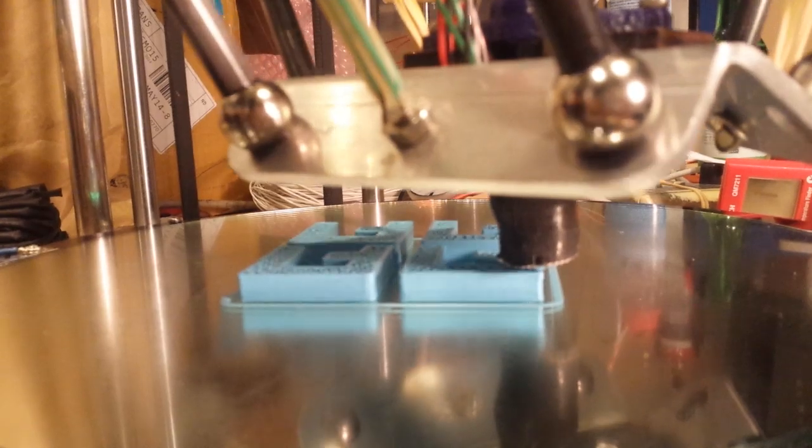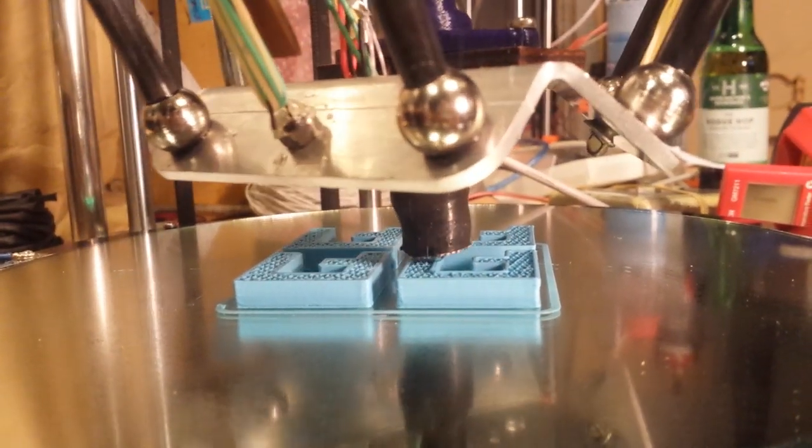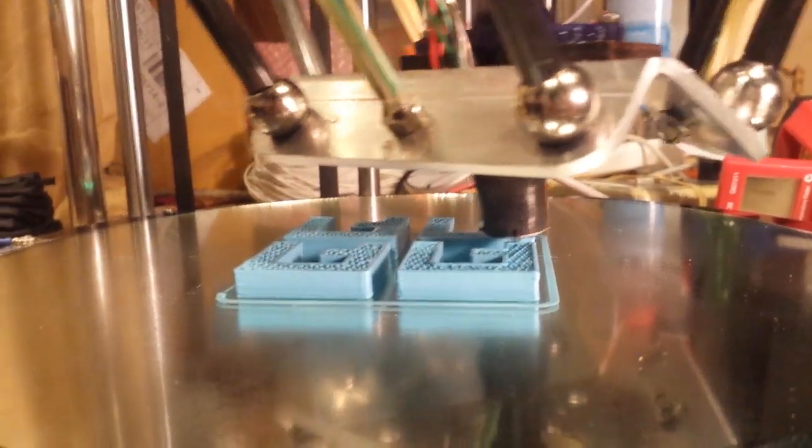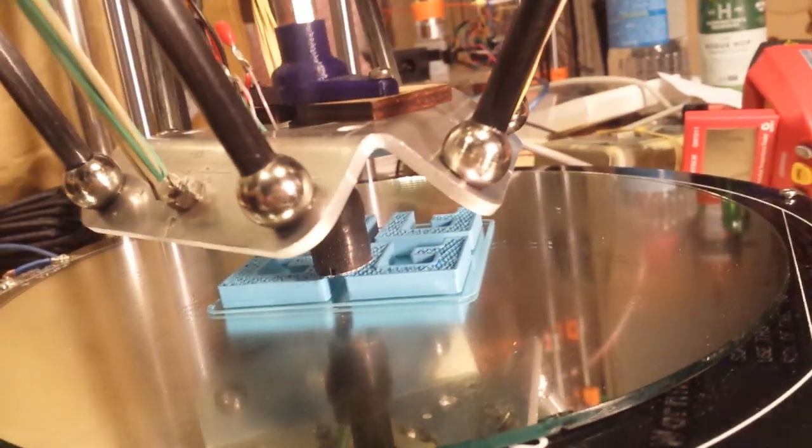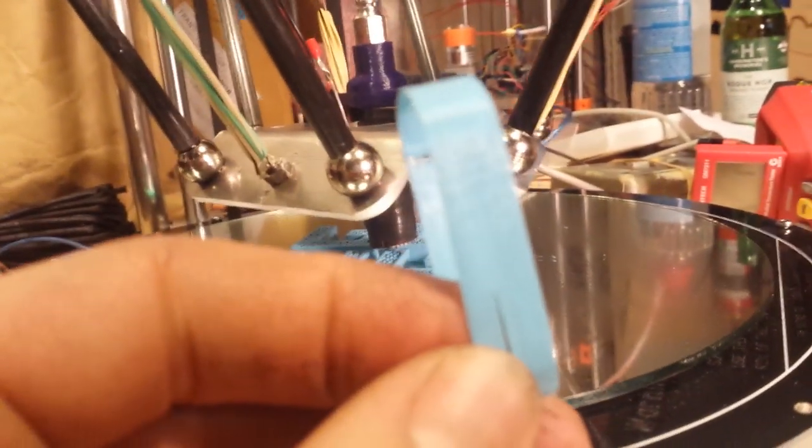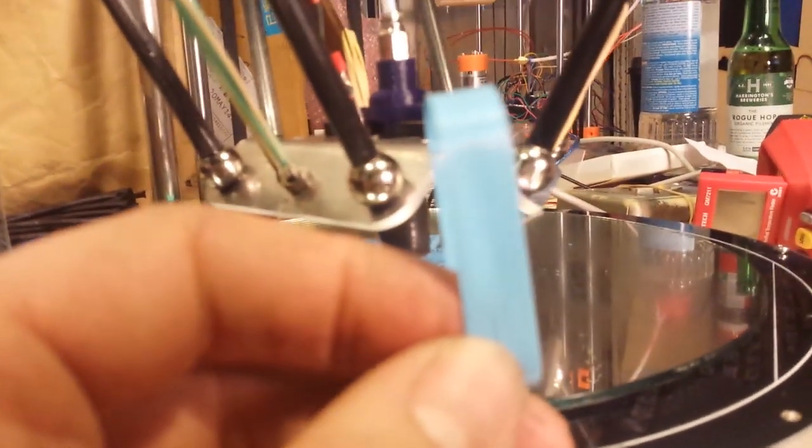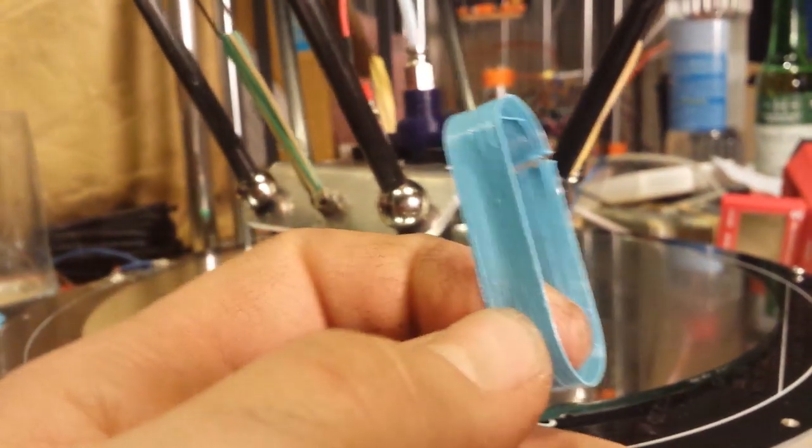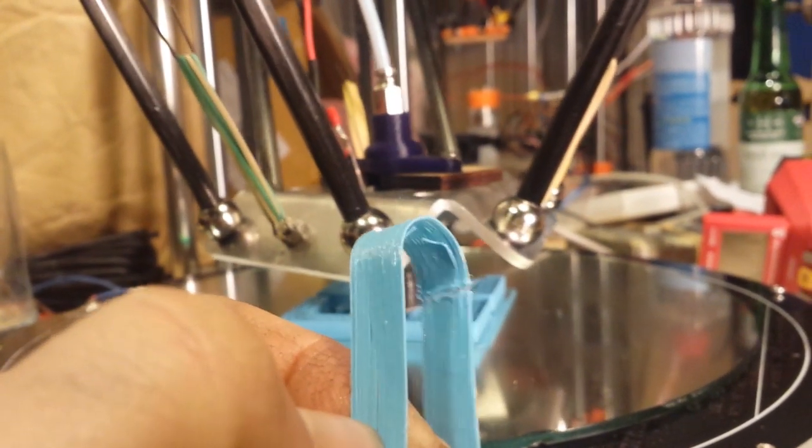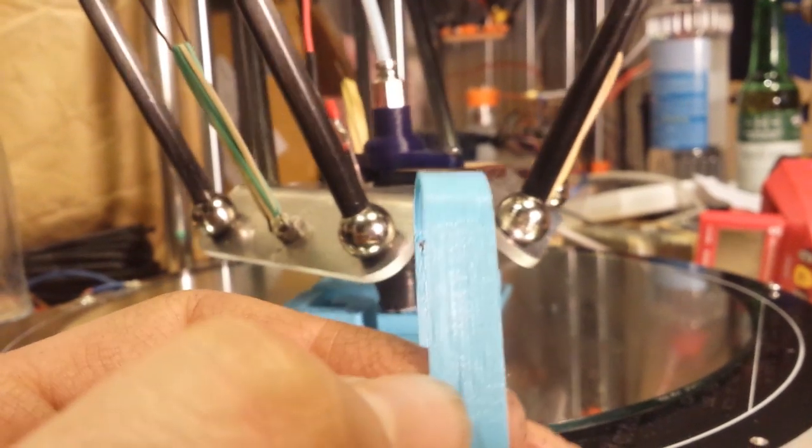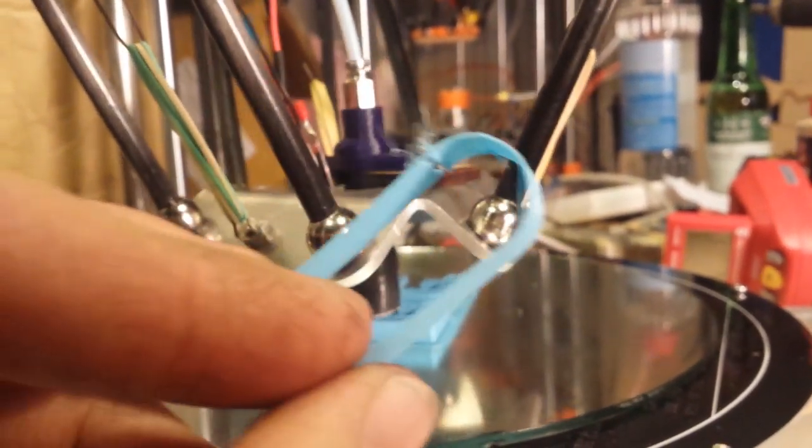This is the first time I've got this machine to print something useful. I've done a couple of test prints where I printed these little things here. It's just a loop. You can see there's a whole bunch of extrusion problems, but yeah, this is the first print.